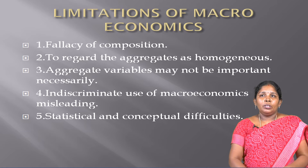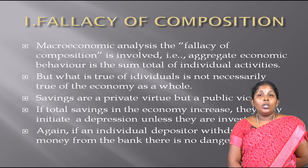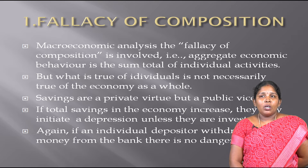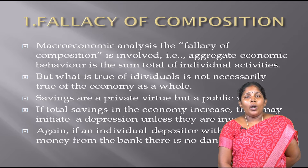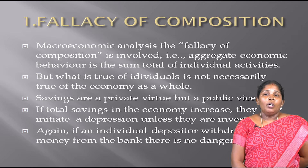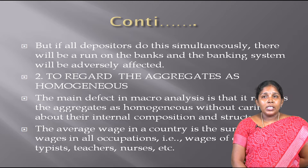First limitation: fallacy of composition. In macroeconomic analysis, the fallacy of composition is involved — that is, aggregate economic behavior is the sum total of individual activities. But what is true of the individual is not necessarily true of the economy as a whole. Savings are a private virtue but a public vice. If total savings in the economy increase, they may initiate a depression unless they are invested. If an individual depositor withdraws money from the bank there is no danger, but if all depositors do this simultaneously there will be a run on the banks and the banking system will be adversely affected.